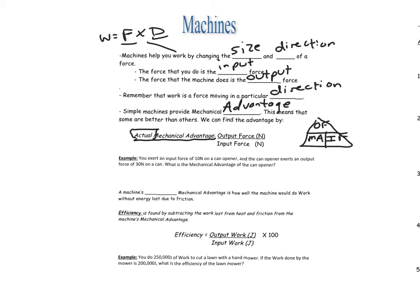For example, we have an input force of 10 newtons on a can opener, and the can opener exerts an output force of 30 newtons on a can. It's tough to open a can, so you want the simple machine to give you more force. The mechanical advantage is the output force divided by the input force — 30 newtons divided by 10 newtons — which equals 3.